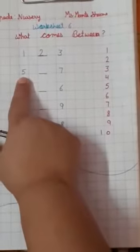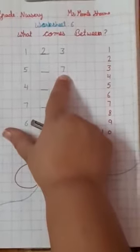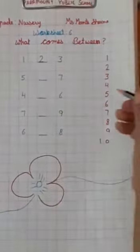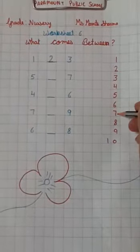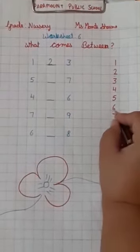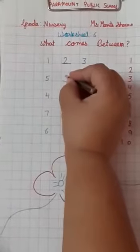Next one is 5. And this one is 7. What comes between 5 and 7? 5 and 7. What comes between 5 and 7? 6. Write here, 6.